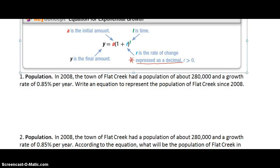In 2008 the town of Flat Creek had a population of about 280,000 and a growth rate of 0.85 percent per year. Write an equation to represent the population of Flat Creek since 2008. So really all we're going to be doing here is using our equation for exponential growth which is right above. We're worried about the population at the end of the growth, so they want us to set up an equation. We're going to have the final population is going to be Y. They've already given us our initial amount A, our initial amount was 280,000 people.